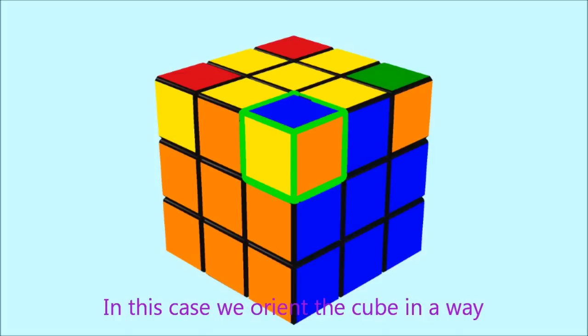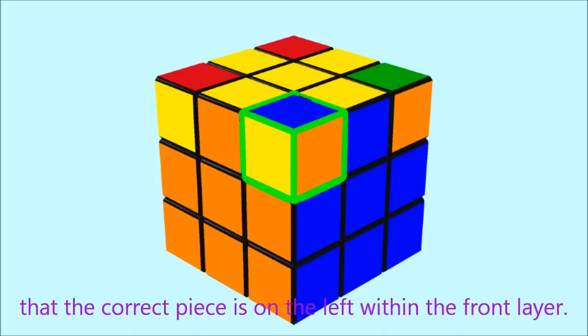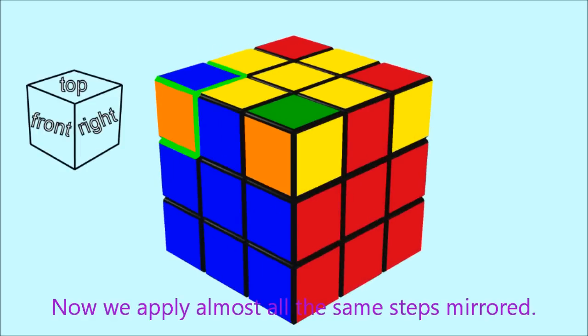In this case we orient the cube in a way that the correct piece is on the left within the front layer. Now we apply almost all the same steps mirrored.